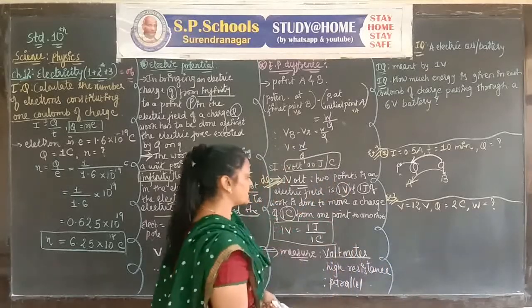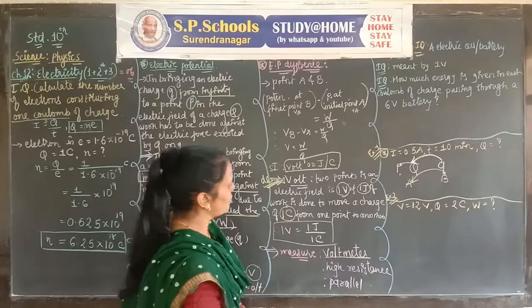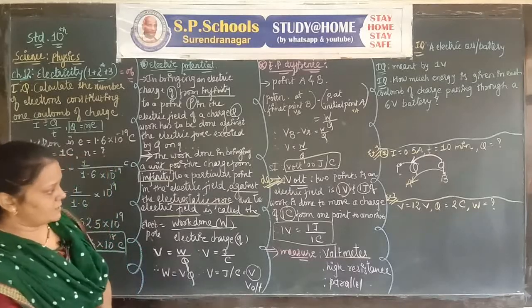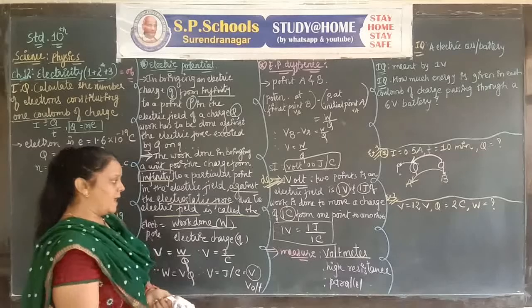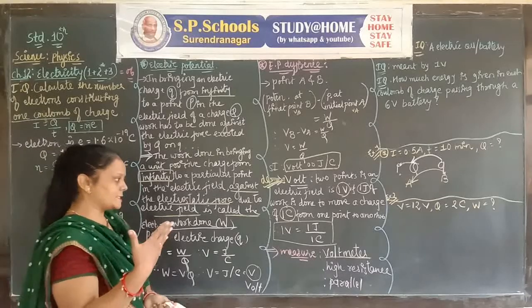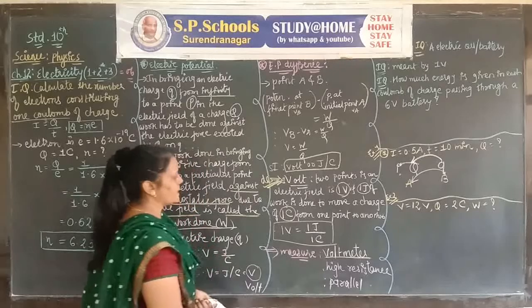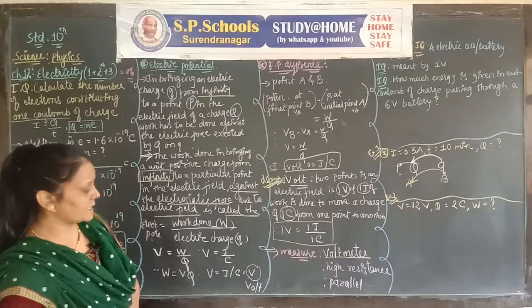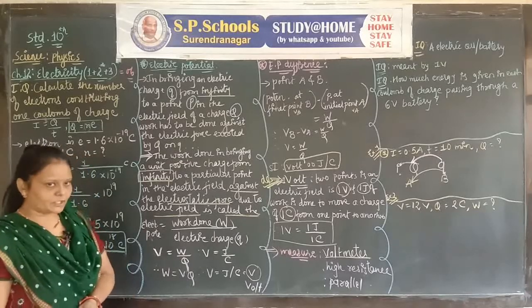Voltmeter is always connected in high resistance and is always connected in parallel combination. To find the electric current, we use the instrument ammeter. Ammeter is always connected in low resistance and in series combination, while voltmeter is always connected in parallel combination. In this chapter we will study series and parallel combinations in detail.